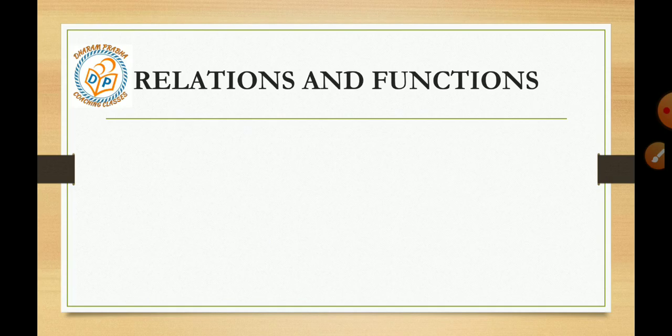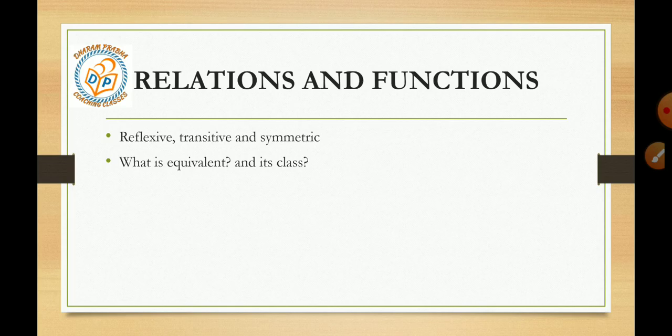Quickly moving to the first chapter, Relations and Functions. In this chapter, important topics are to tell what kind of relation between two things: reflexive, transitive, and symmetric, and if it is, then why. Next, we need to know equivalence and its class. Next, we need to understand the type of function, which type of function is one-one or onto. Next, we need to understand composite functions—if it is FOG or GOF, we need to proceed accordingly.